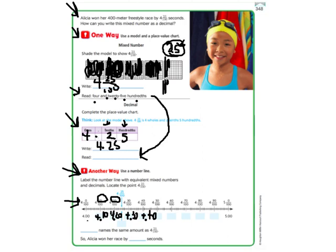We don't really need any more information. Okay, so when I look down here at my decimals, I've got four point twenty here and four point thirty here. My number is right in between twenty and thirty, which would be four point twenty-five. So then you just rewrite that down here. Four point twenty-five names the same amount as four and twenty-five hundredths. So Alicia won her race by four point twenty-five seconds.